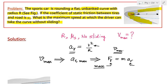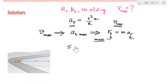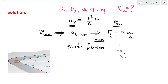This centripetal force comes from friction. Since the car is neither sliding inward nor outward, there is no sliding, which means the friction acting is static in nature. We therefore have static friction providing the centripetal force in this case.